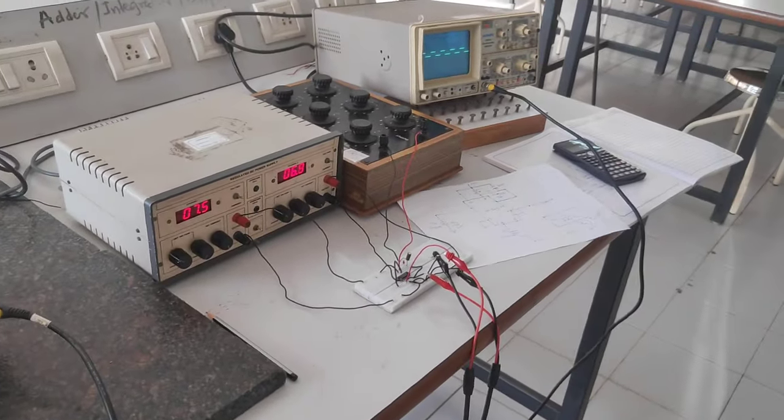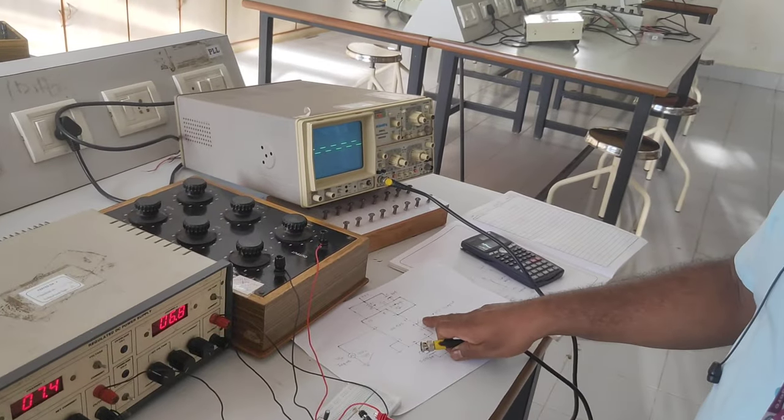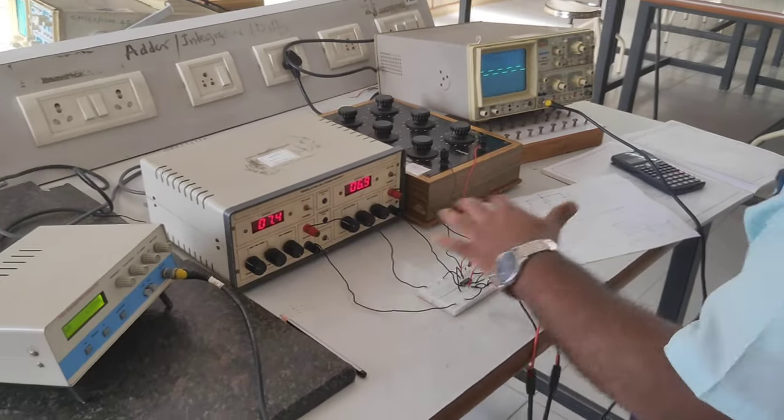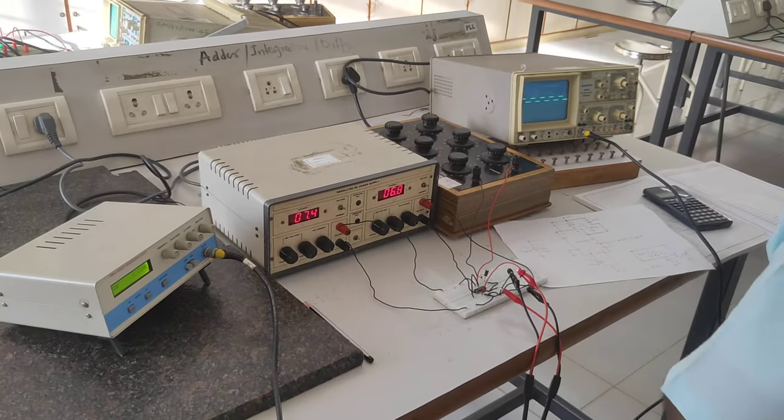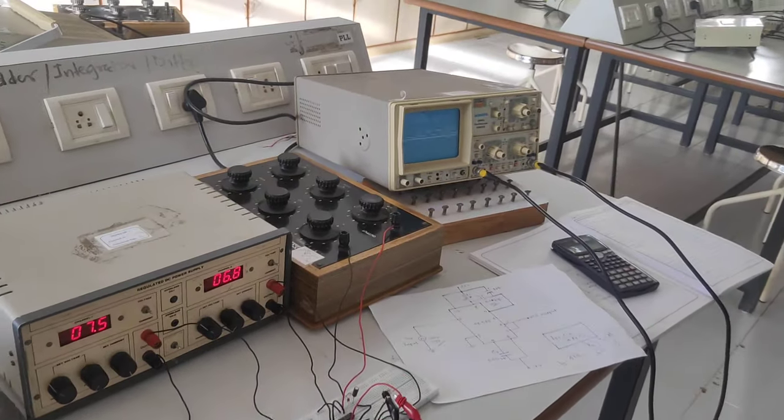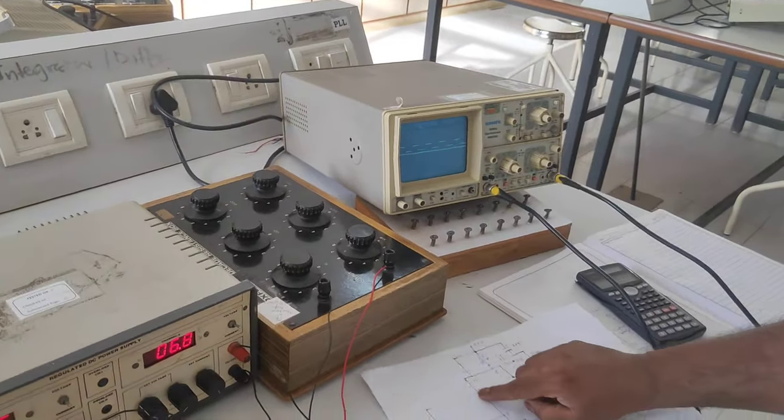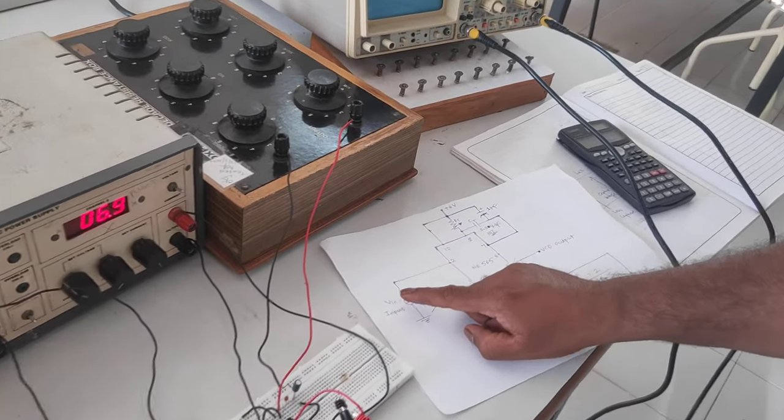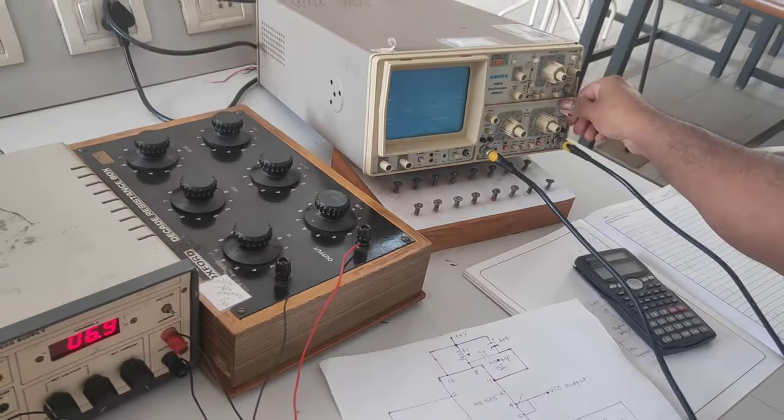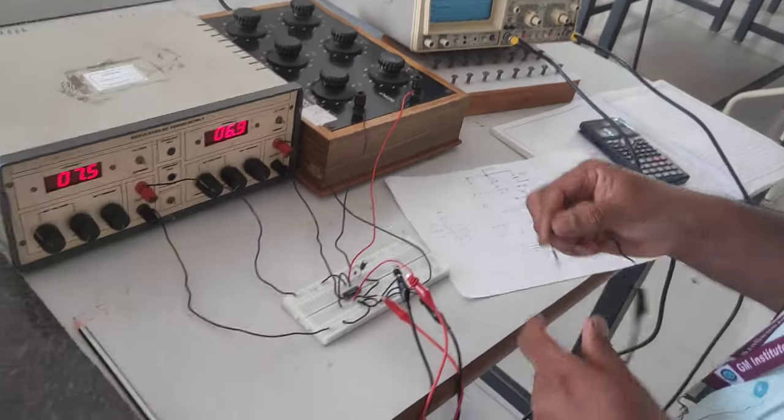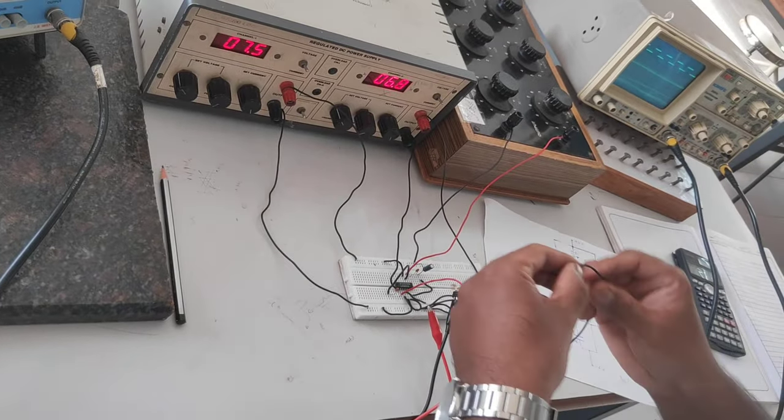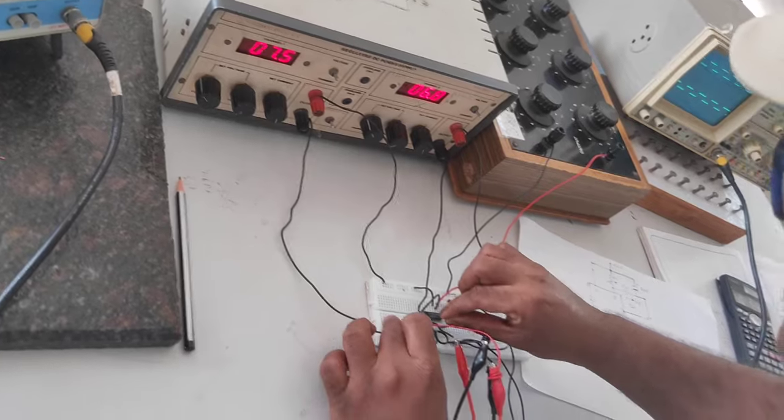So now take another probe. One probe I have connected to the VCO output, pin number 4. One probe I have taken from the FG, I have connected to pin number 2 of the IC to apply the input signal. So another probe, just observe here carefully. I am giving at this point, pin number 2, because I have to compare input to the VCO output. To make a comparison on dual channel oscilloscope, I am giving another probe connecting. This is GND and this is VCO.